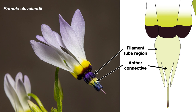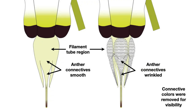In this photograph, the connectives are yellow and the filament tube region is purple. Anther connectives are either smooth (two species) or wrinkled (six species). The wrinkles are either transverse — perpendicular to the style (five species) — or randomly wrinkled in no clear direction (one species). In pressed specimens, anther connectives may appear to be longitudinally wrinkled, parallel to the style, but no species in California has longitudinally wrinkled connectives when fresh.